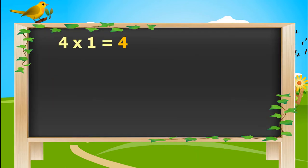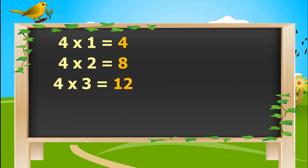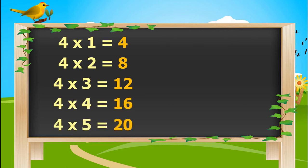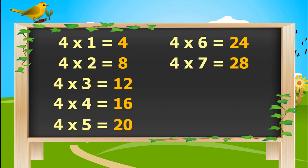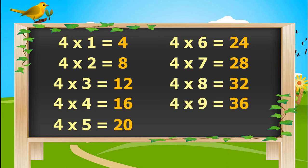4 ones is 4. 4 twos are 8. 4 threes are 12. 4 fours are 16. 4 fives are 20. 4 sixes are 24. 4 sevens are 28. 4 eights are 32. 4 nines are 36. 4 tens are 40.